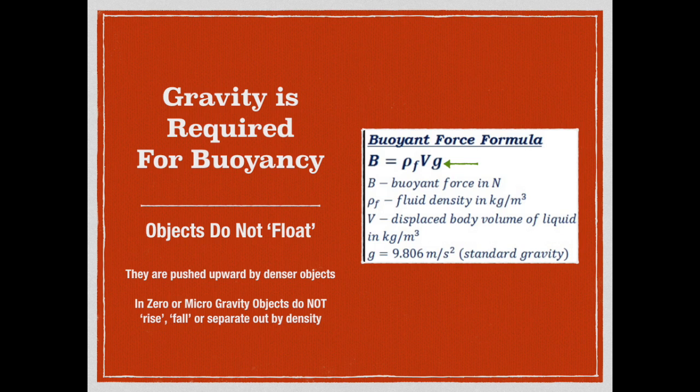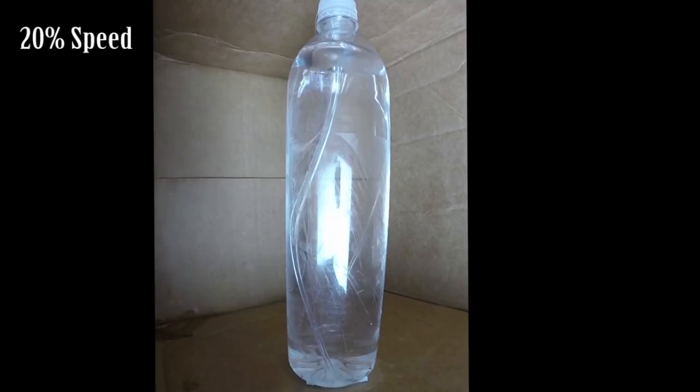We know that when we drop an object and it is in free fall it's in a zero gravity condition. Let's do a short experiment where we drop a bottle after blowing some bubbles in it and see what happens to the bubbles.